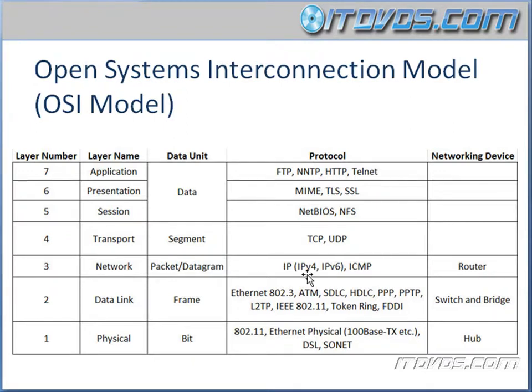Some protocols that work on layer 3 are going to be IP — IP version 4, also IP version 6, which we're going to be talking about as well — ICMP, and there are other protocols that work at layer 3. But these are the main ones we're going to be focusing on.